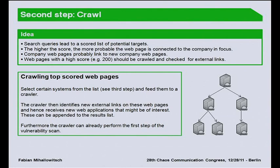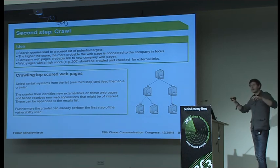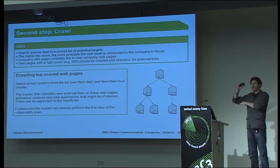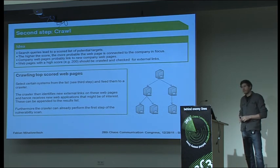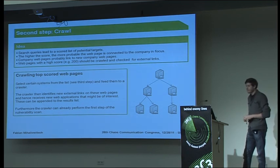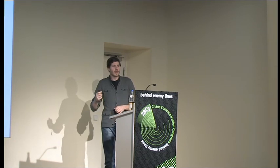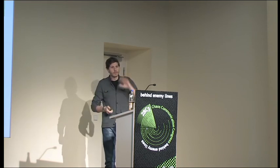Now we have a scored list with search results, and we can assume that at the top of the list we'll have web pages linked to the company. Web pages connected to a company probably contain links to new company web pages — external links. So we take the top results and crawl them, which allows us to identify new web pages and append them to the list. Furthermore, by crawling those pages we already perform the first part of the vulnerability assessment, gathering all forms, URLs, and form fields on the page.